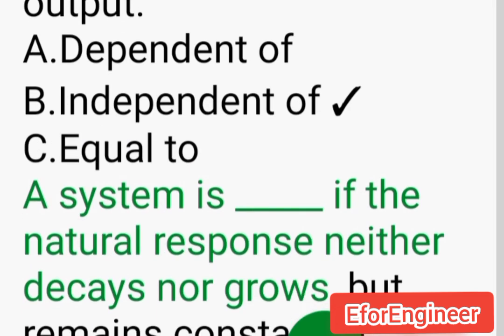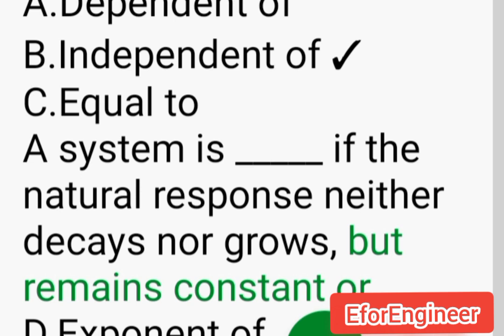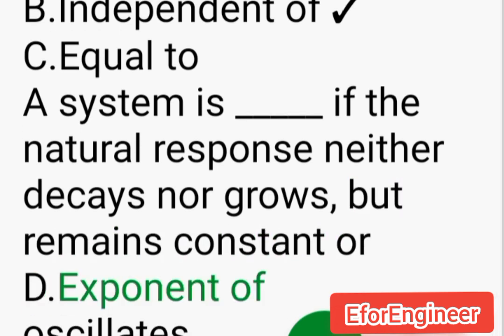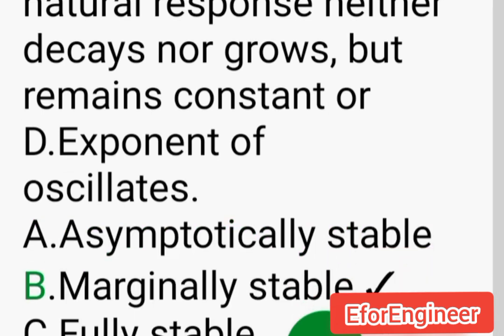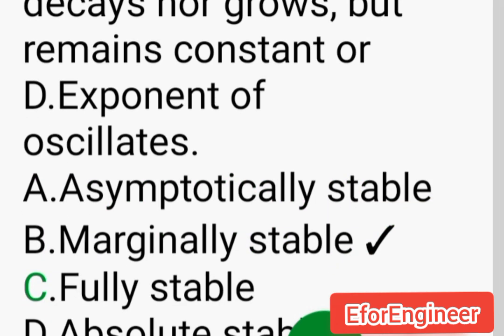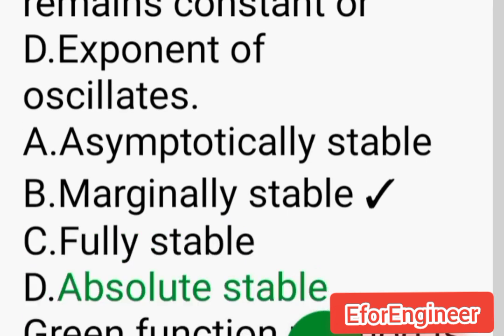A system is ___ if the natural response neither decays nor grows but remains constant or oscillates: A. Asymptotically stable, B. Marginally stable, C. Fully stable, D. Absolutely stable.